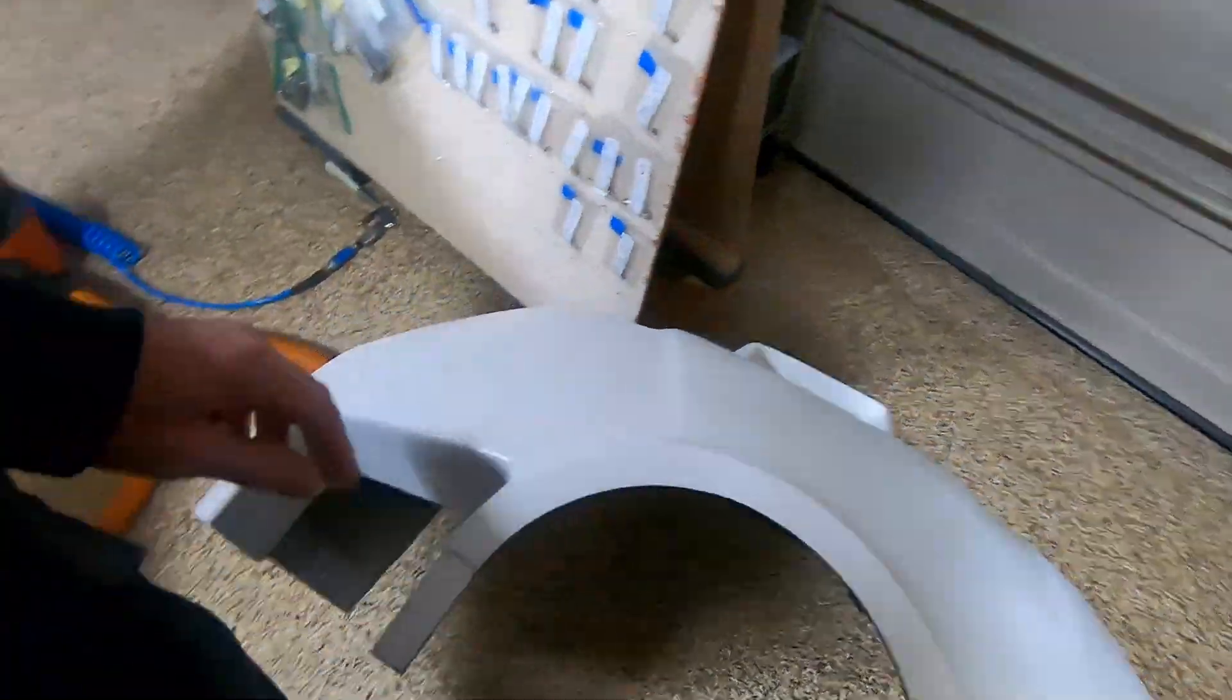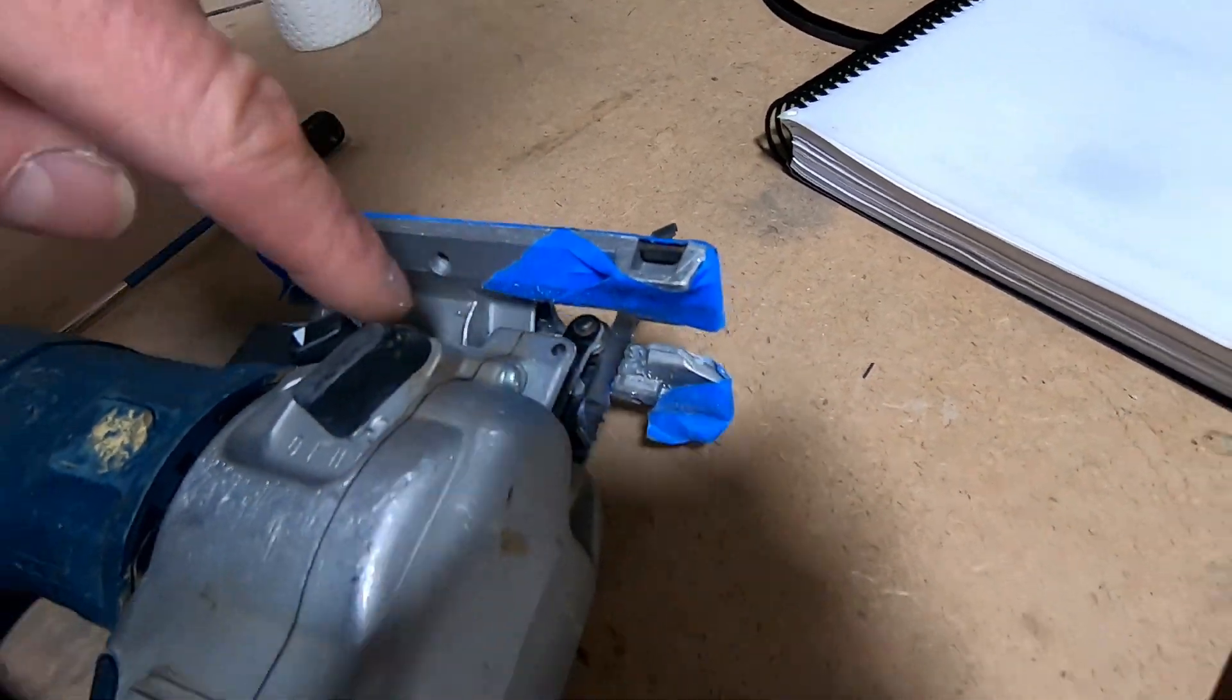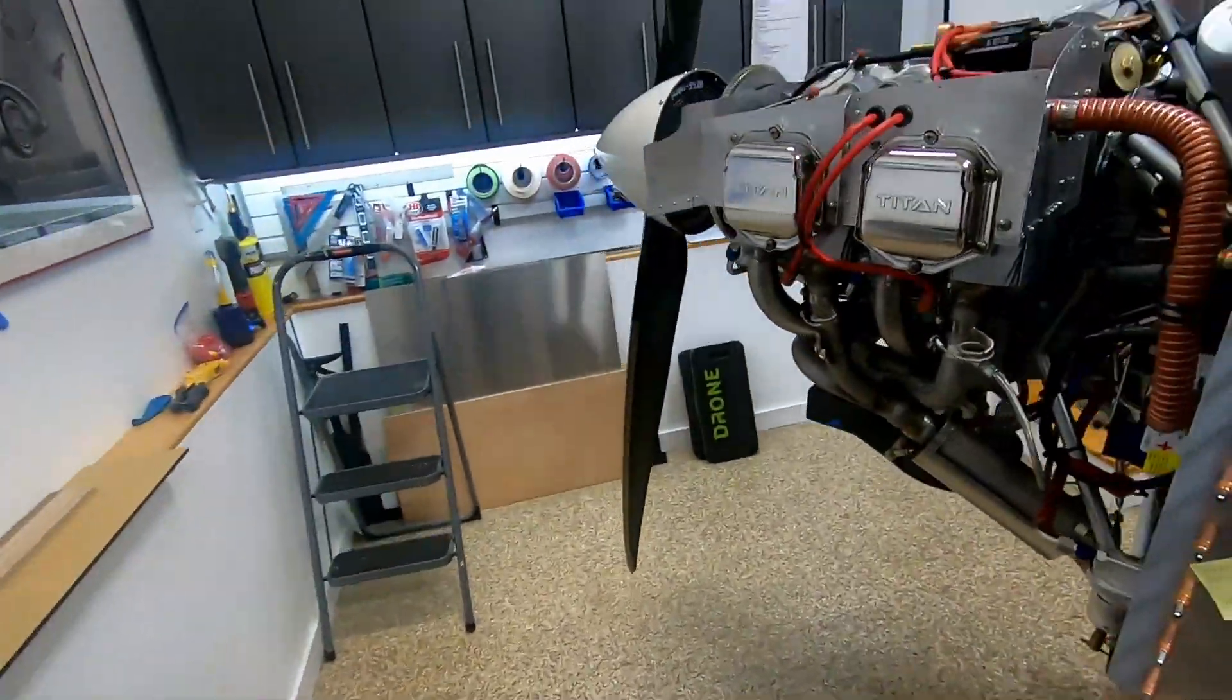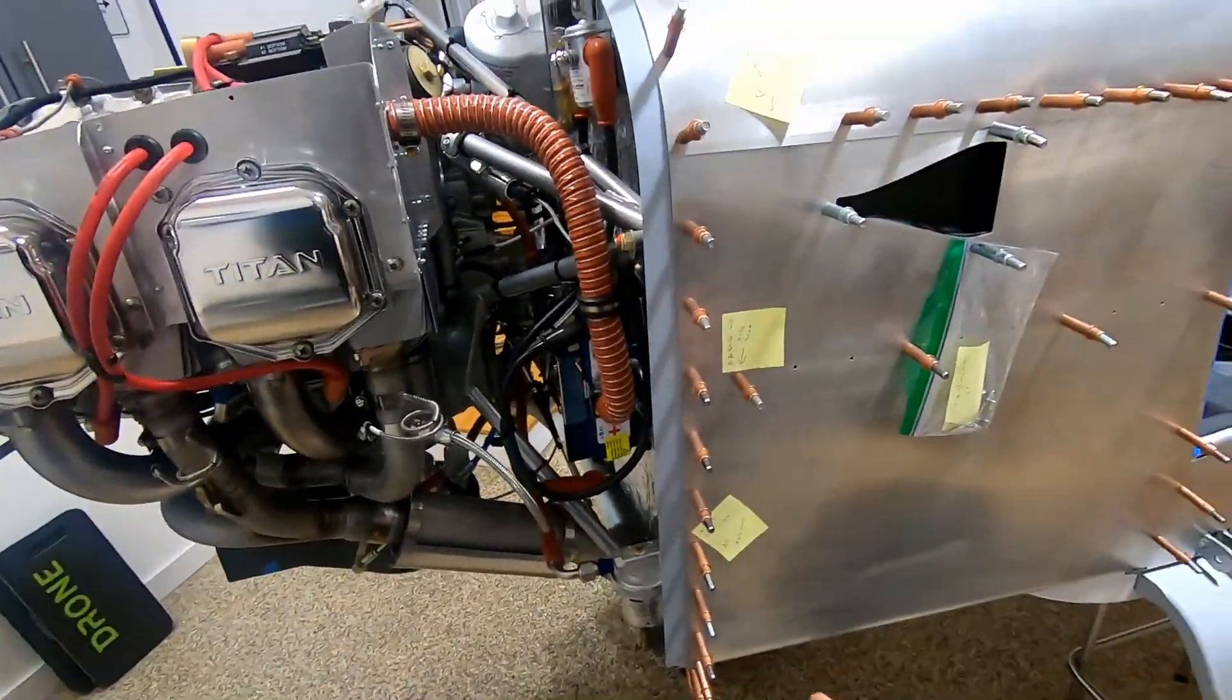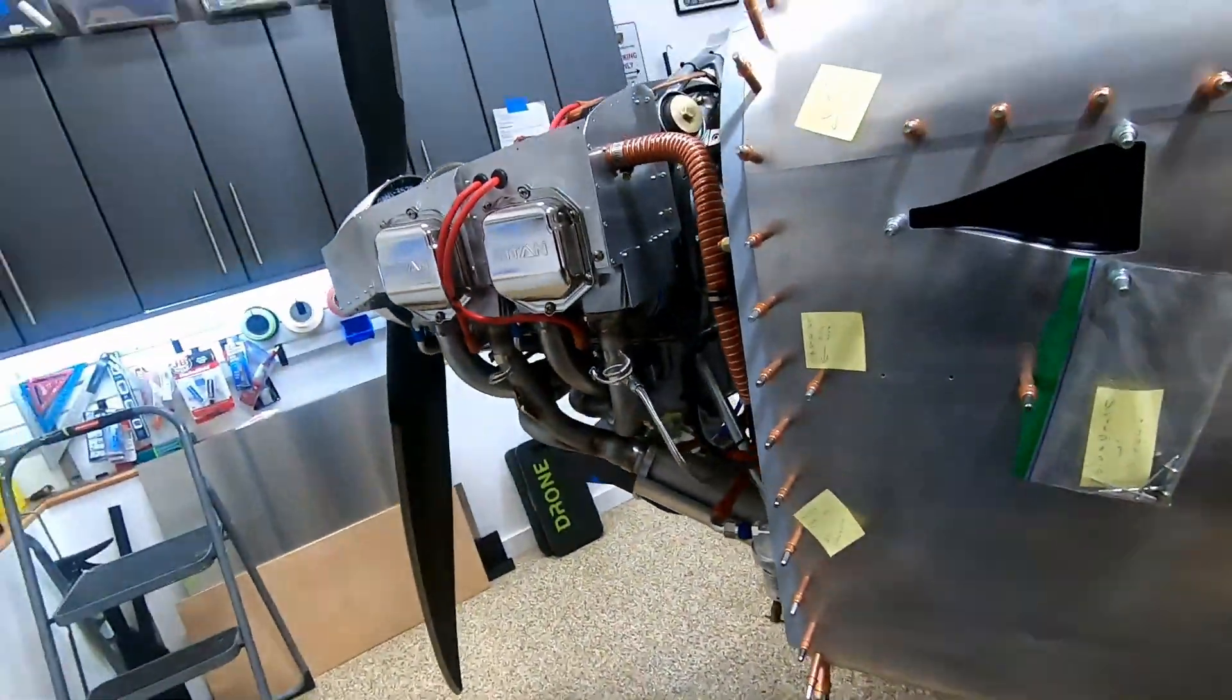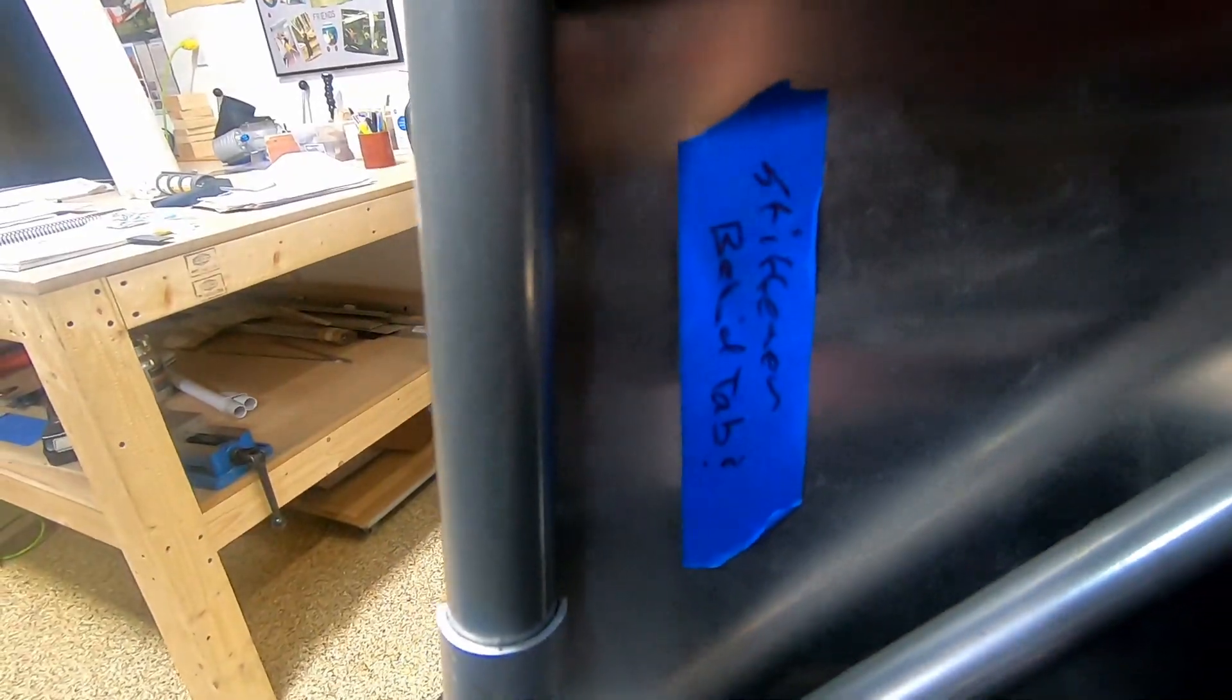That worked out pretty good. Got the vacuum cleaner going to suck up the itchy dust, but I changed the blade. It's amazing—just that little cut pretty much wore out that blade. So next, I think it's time to kind of finagle it on here and see where it is, but I gotta put these rivets in first and dig back into the old manual to see what rivets actually go here.